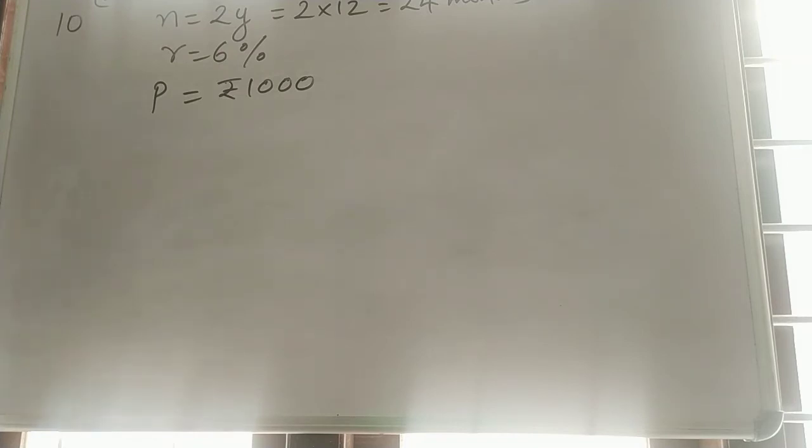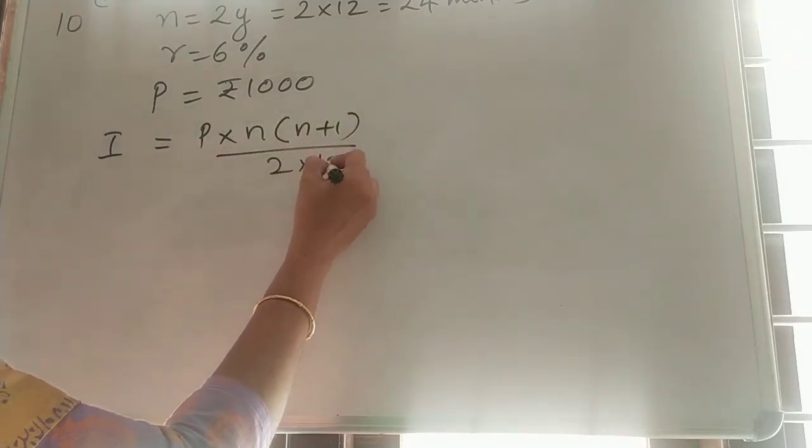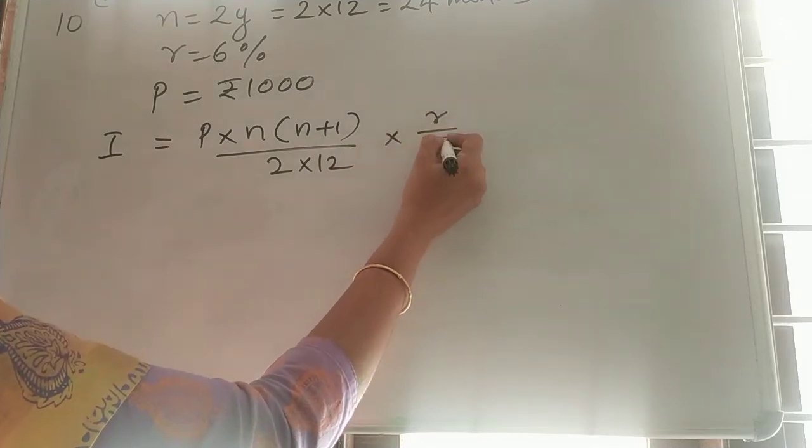Next, find the interest earned in 2 years. So, I we want to find out. What is the formula for finding I? First part, we want to find the interest. I is equal to P into N into N plus 1 divided by 2 into 12 into R by 100.